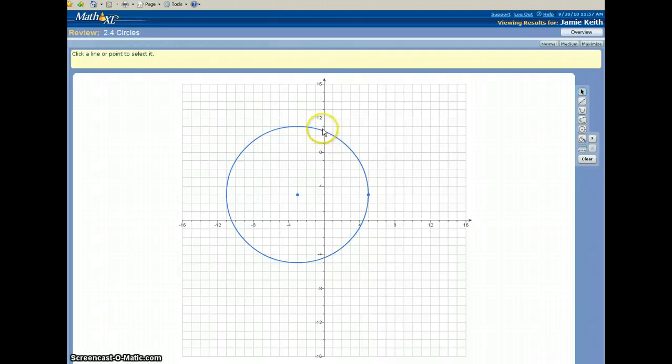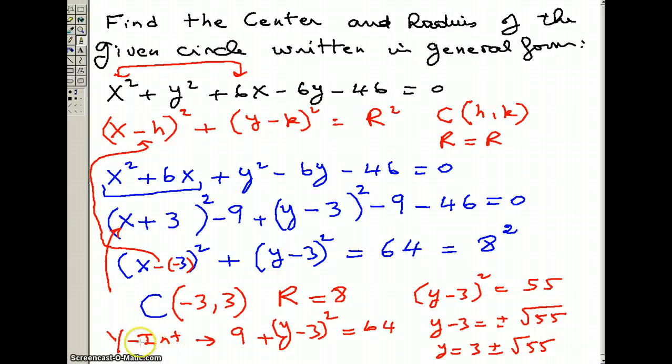And notice we have 2 y-intercepts here, and 2 x-intercepts. To find the y-intercept and the x-intercept, let's start by finding the y-intercept. Just plug in x equals 0. So here we have a 3, which is from here, 3 squared is 9. (y minus 3) squared equals 64.